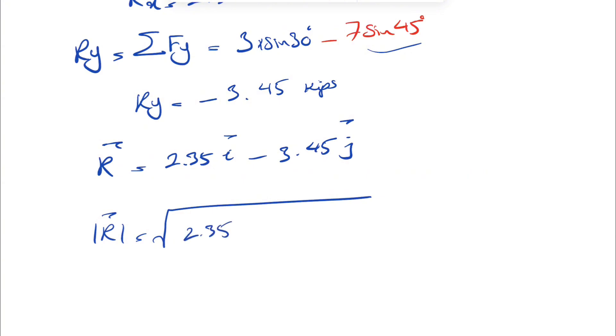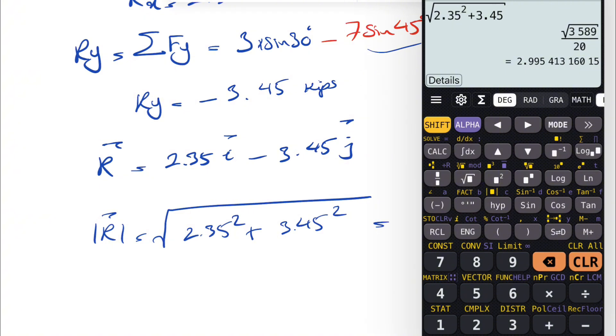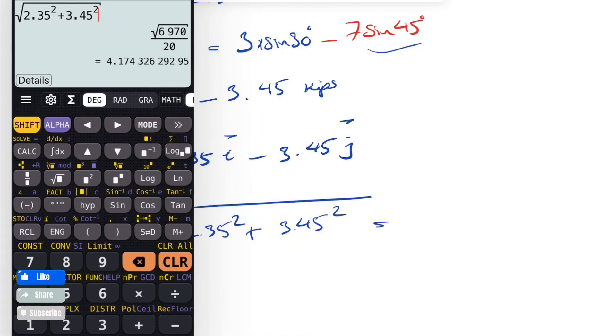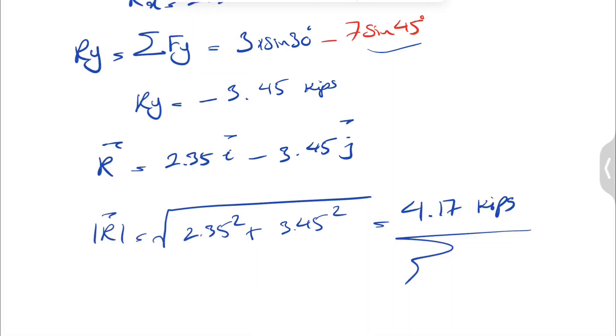we have the square root of 2.35 squared plus 3.45 squared. That's going to give us 4.17 kips for the magnitude of R.